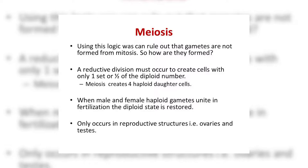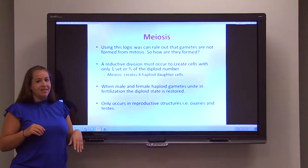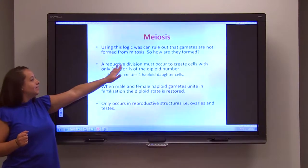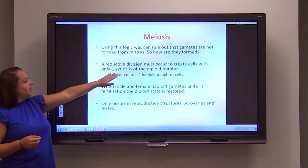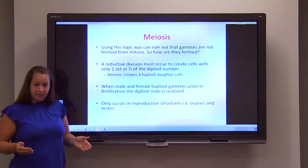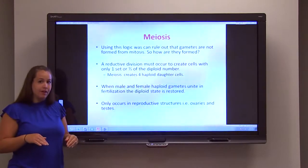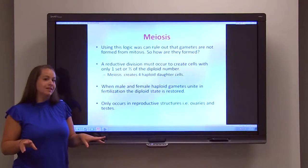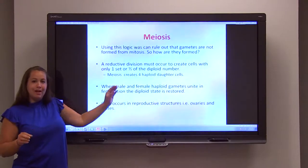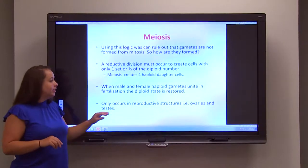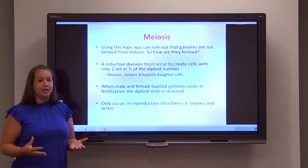Using that logic, we can rule out that gametes are formed by mitosis — there has to be a different process. They're formed with a process known as meiosis, which is a reductive division. This is where you start off with one cell and reduce the amount of genetic information to create four varied haploid cells. Haploid has half the number of chromosomes — diploid had two homologous chromosomes or one set, while haploid only has one chromosome, or one half of a set. That way, when the male and female haploids unite during fertilization, you restore that 2N state, and that diploid cell can then perform mitosis over and over again to create a full organism.